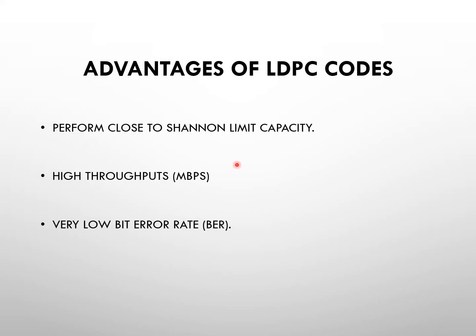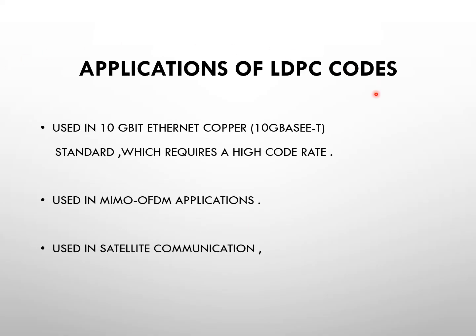The advantages of LDPC codes include performance close to the Shannon limit. For example, if a channel has a capacity of 50 bits per second, LDPC codes can perform up to 48 or 49 bits per second. Compared to turbo codes, which perform well only at low bit rates, LDPC codes maintain good performance at higher rates. They also have very low error propagation.